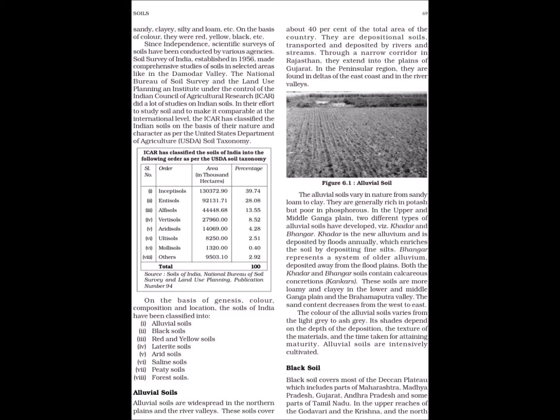Alluvial soils are widespread in the northern plains and the river valleys. These soils cover about 40% of the total area of the country. They are depositional soils transported and deposited by rivers and streams. Through a narrow corridor in Rajasthan, they extend into the plains of Gujarat. In the peninsular region, they are found in deltas of the east coast and in the river valleys. The alluvial soils vary in nature from sandy loam to clay. They are generally rich in potash but poor in phosphorus.